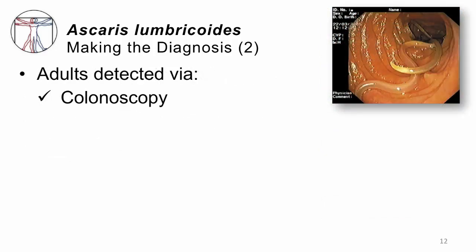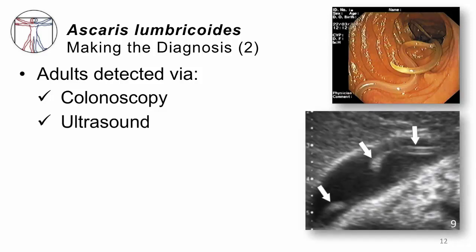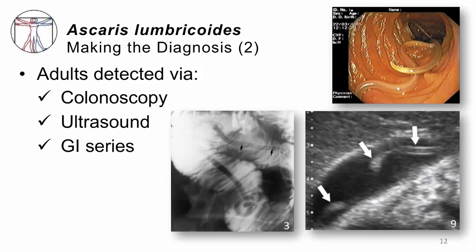A gastroenterologist may also make a diagnosis during routine colonoscopy. It's also seen on imaging: this is an ultrasound of a patient's gallbladder where they thought the patient had gallstones, but what they actually have is a worm wriggling around eating the biliary fluid. Here's a patient who had a GI series — an x-ray of the belly after swallowing a contrast agent like barium. You can see the negative impression the worm makes by excluding the barium, and if you look carefully where the arrows are, you can actually see the barium meal of the worm as they eat the barium themselves.